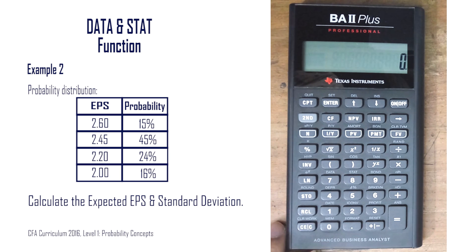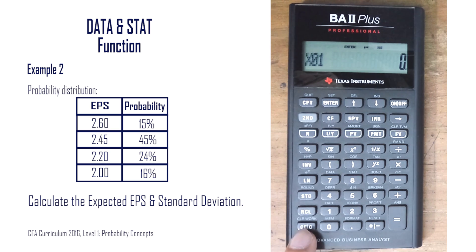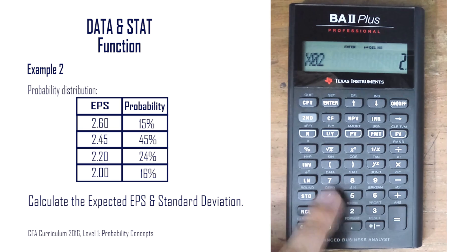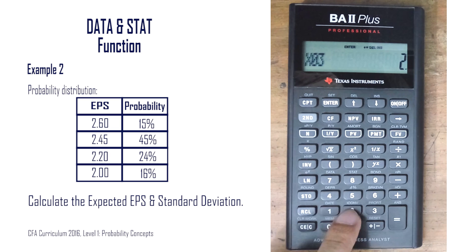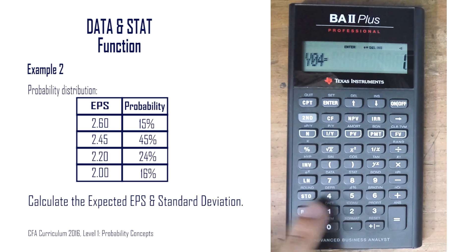In Example 2, we use the one-variable calculation method with an example taken from the reading titled Probability Concepts of the 2016 CFA Level 1 curriculum. The probability distribution of EPS for the current fiscal year is given, and we need to compute the expected value and standard deviation of EPS. Note that the probability data should be entered as the y variable. We clear the data function with Second 7 and Second Clear Entry, then enter 2.61 in x1, Enter, Next, 15 into y1, Enter, Next, 2.45, Enter, Next, 45, Enter, scroll down, 2.2, Enter, down, 24, Enter, Next, 2, Enter, and 16, Enter.